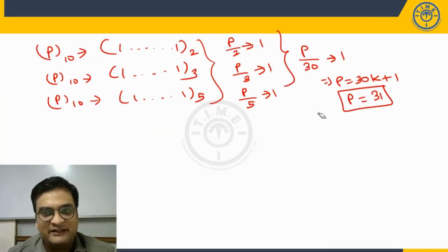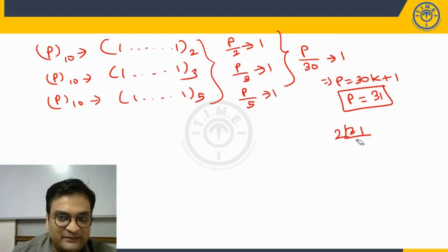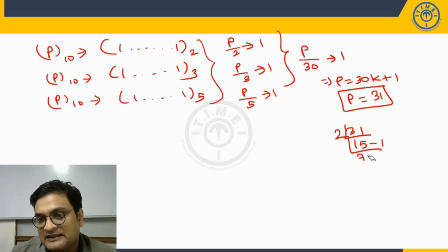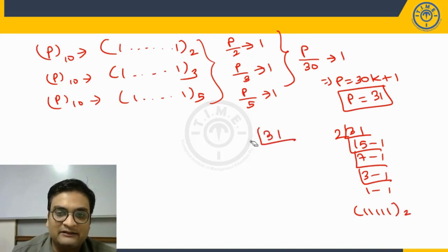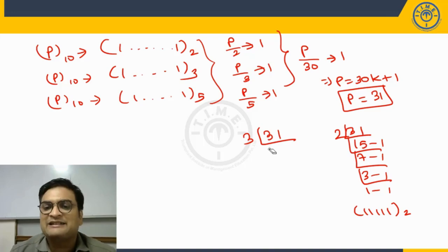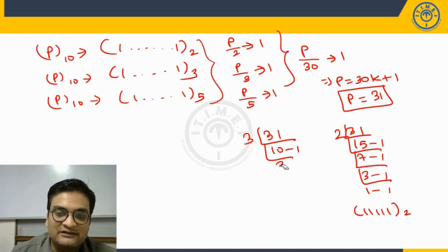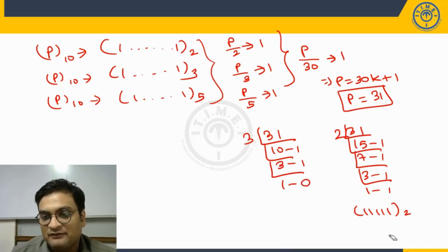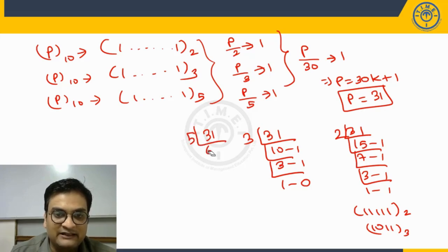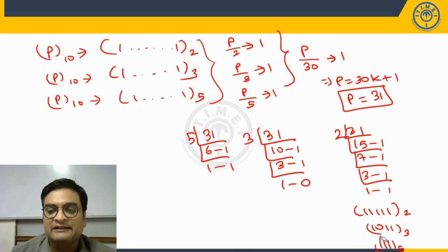Quickly, if you want to verify, we may verify that. 31 if you try to convert this into base 2: 15,1. 7,1. 3,1. 1,1. So it is 1,1,1,1,1,1 in base 2. 31 converting into base 3: 10 times 1. 3 goes 3 times 1. 1, 3 goes 1 time 0, so 1,0,1,1,1. Starting digit and leading digit, both are 1. Similarly, for 5, 6 times 1, 1 times 1. So 1,1,1 in base 5. Leading and ending digit, starting and ending digit, both are 1.